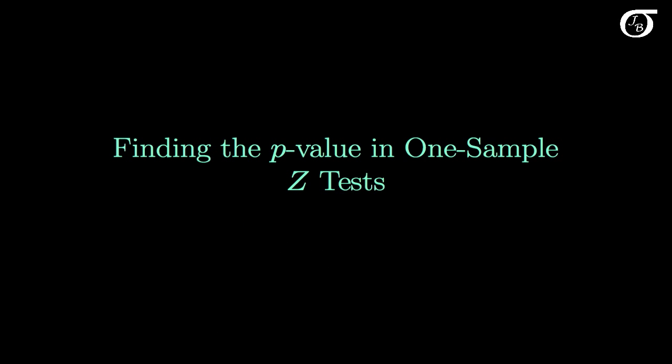Let's look at finding the p-value in one-sample z-tests. I'm going to assume that you already know how to find areas under the standard normal curve using either a computer or the standard normal table. If you don't know how to do that, you should figure that out before watching this video.